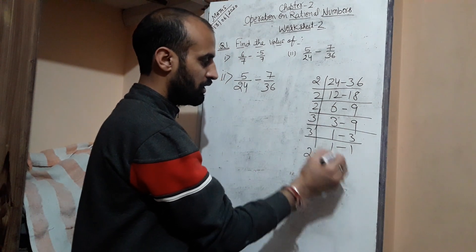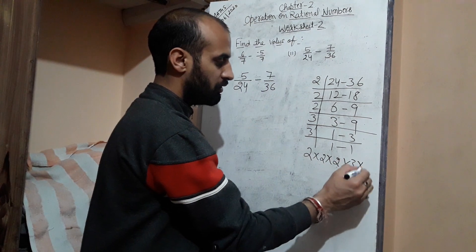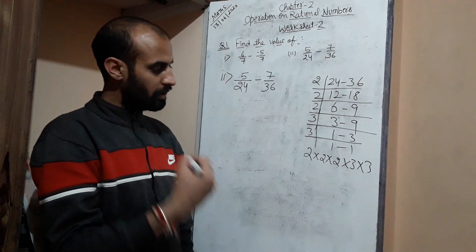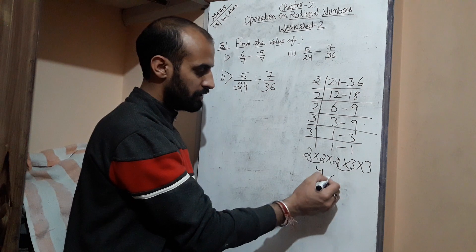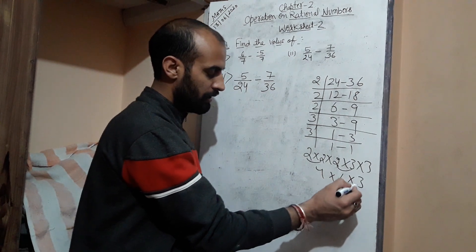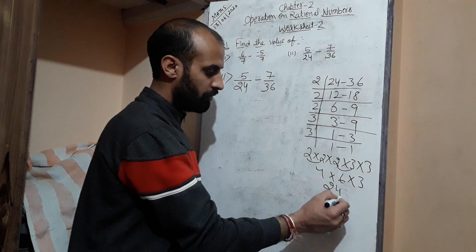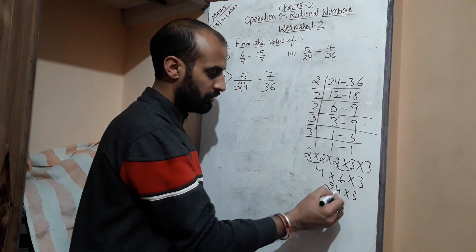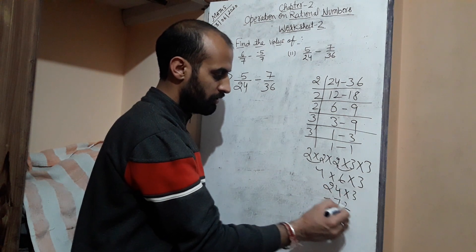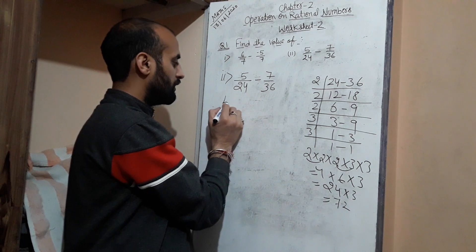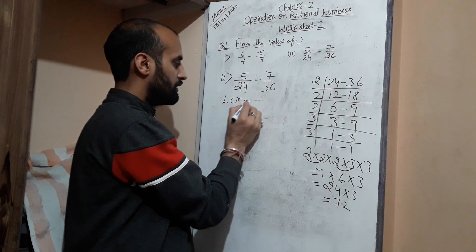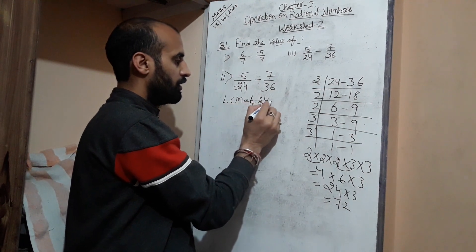2 times 2 times 2, three times 3 times 3, two times: 2×2=4, 3×2=6, and now 6×4=24 times 3, so you will get 72. So the LCM of 24 and 36 equals 72.